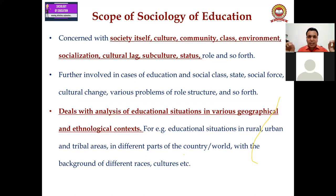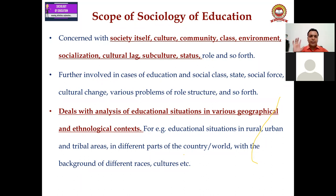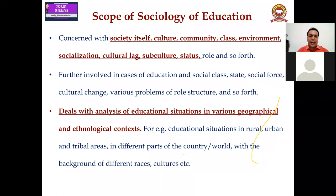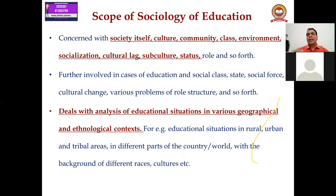Kyunki sociology of education kya tha? Scientific study tha — education ki aur society ki. Further, in case of education and social class, state, social forces, cultural change, various problems of role structure and so forth. Sociology of education also deals with the analysis of educational situations in various geographical and ethnological contexts. For example, educational institutions koi rural area mein hain, urban mein hain, tribal areas hain, different parts of the country hain — unka background, unka influence kya hai, society ke persons ka education mein — in saaron ko bhi scope of sociology of education ke under hi aate hain.